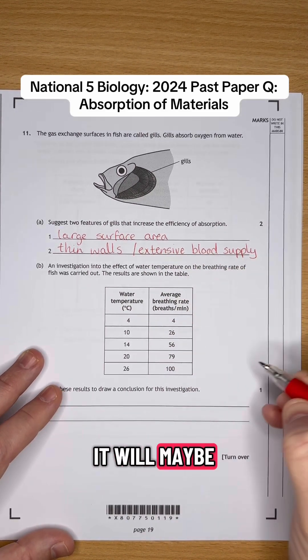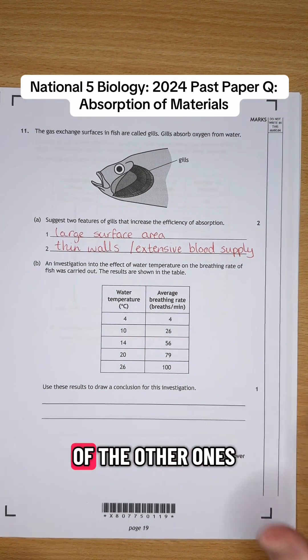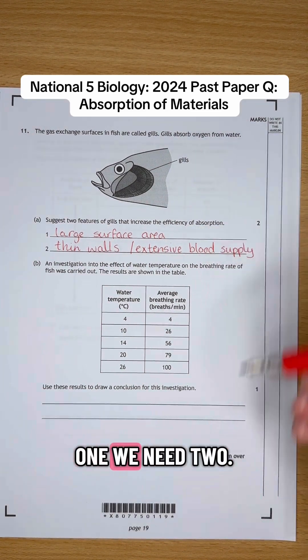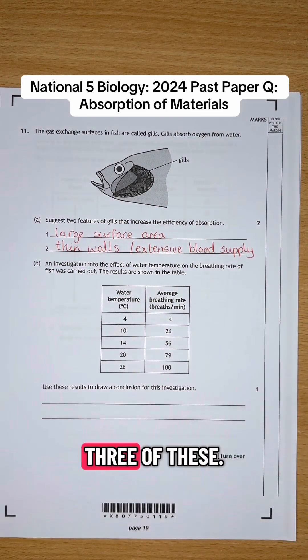Quite often when you get this in the exam, it will maybe give you one of those and ask for one of the other ones or something similar. But in this one, we need two. So it's well worth learning all three of these, okay?